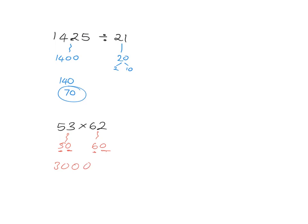And if I actually go and do the calculation, I get 3,286, right? And then I know that's probably right because it's close to what I approximated.